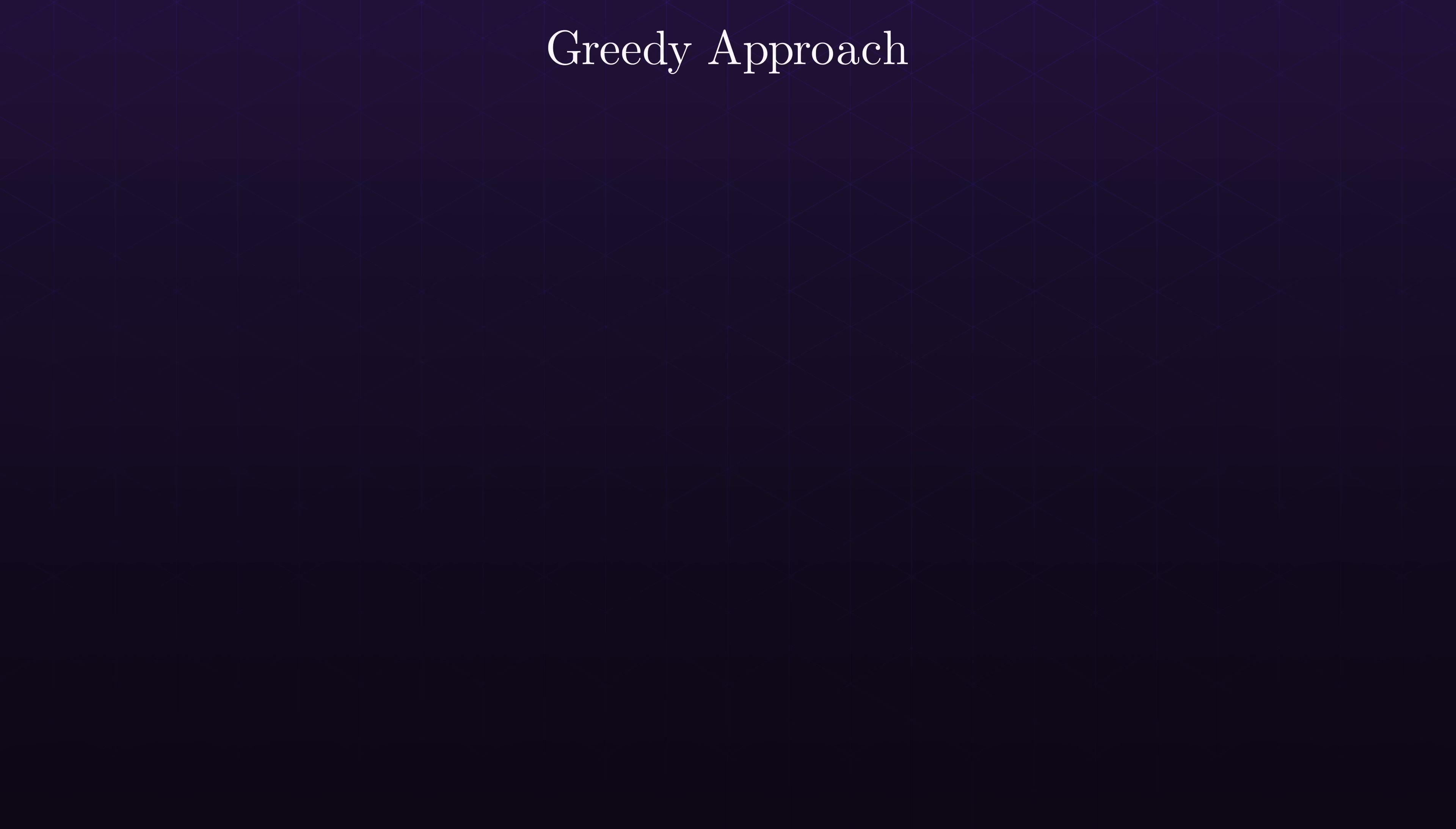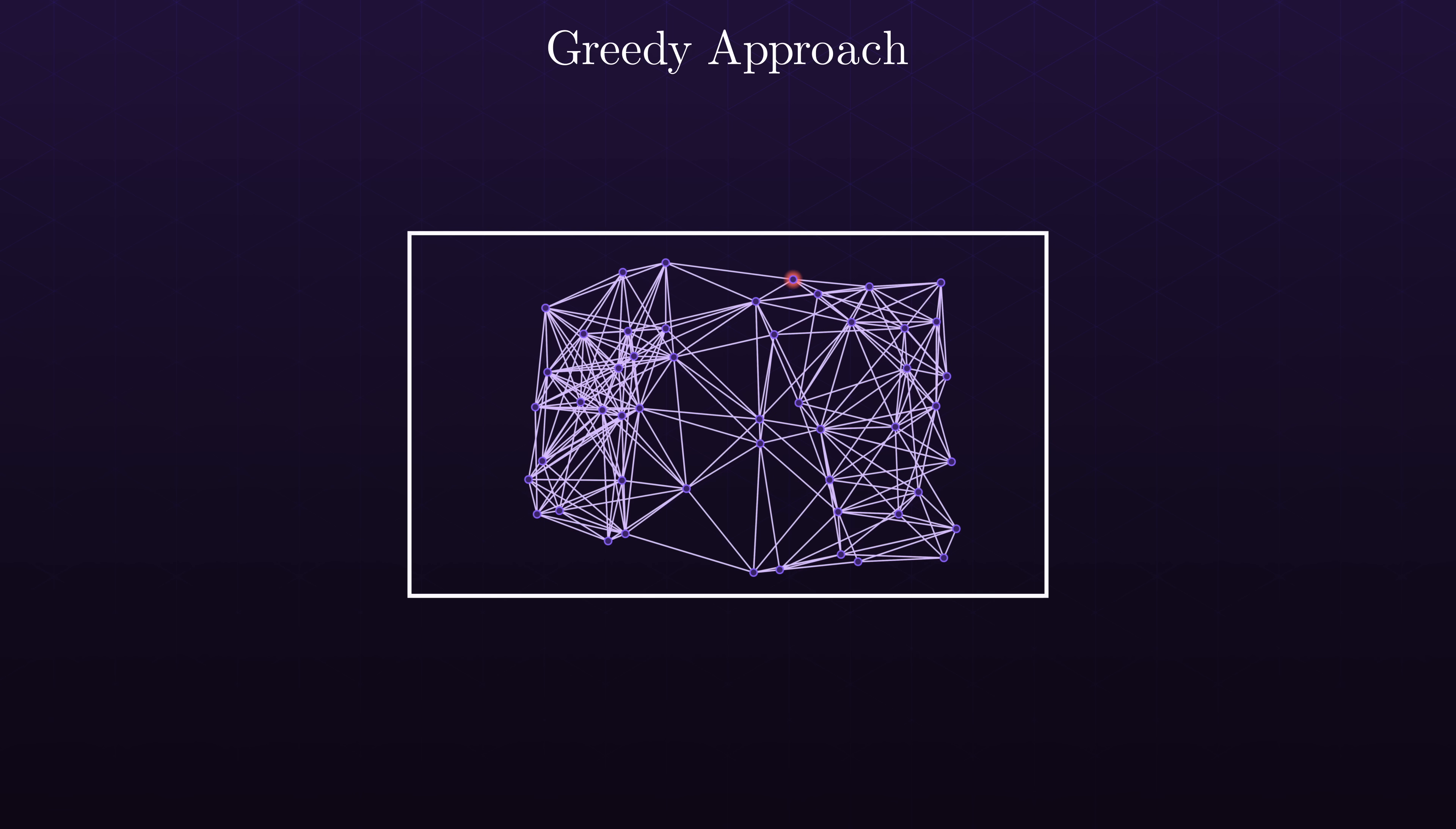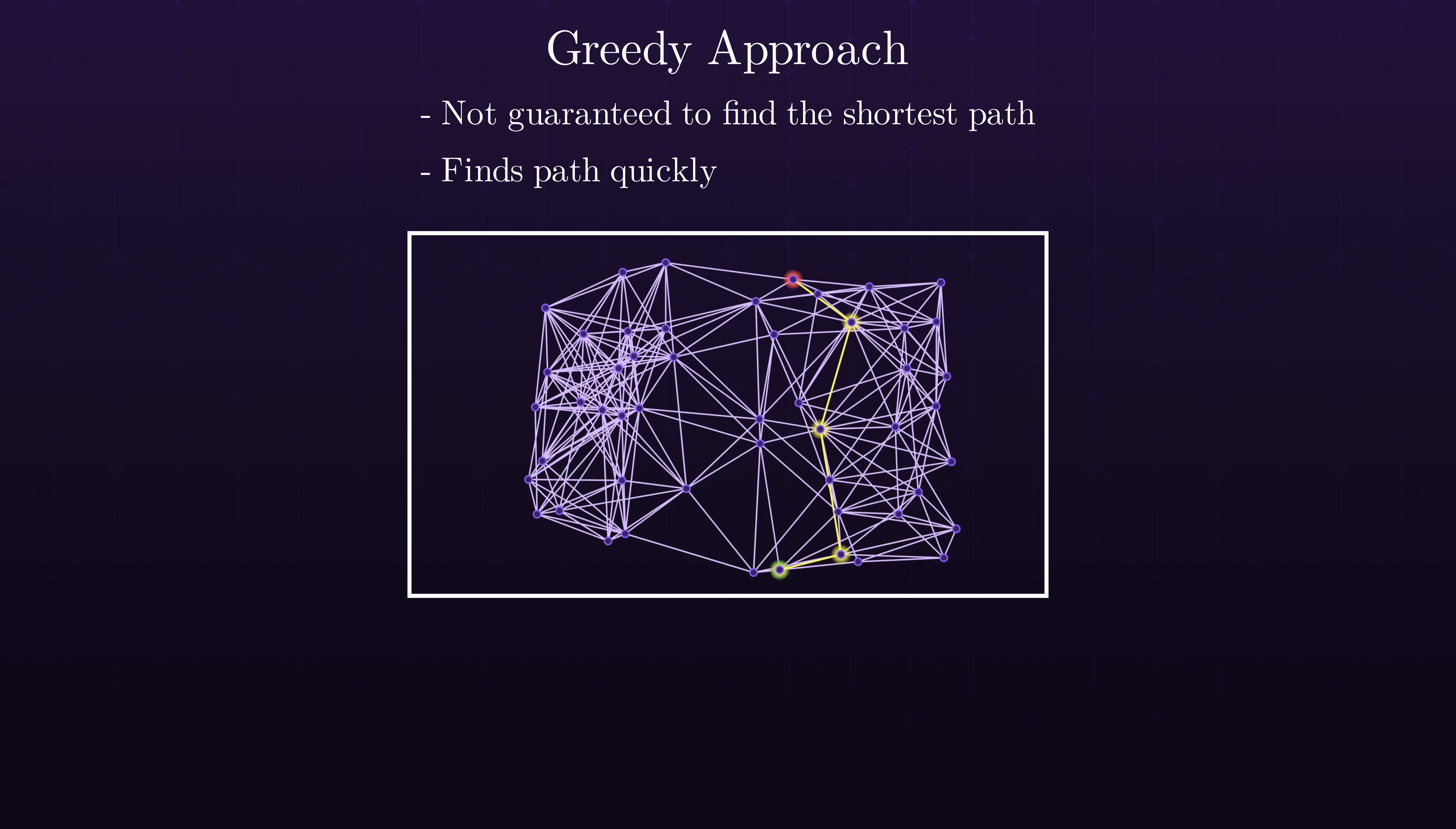So we have two approaches with different characteristics. The greedy approach relies on an estimate of how close it's getting to the goal without factoring in the cost of getting there. It's generally not going to find an optimal path as a result. But one nice thing about it is it finds a path relatively quickly.